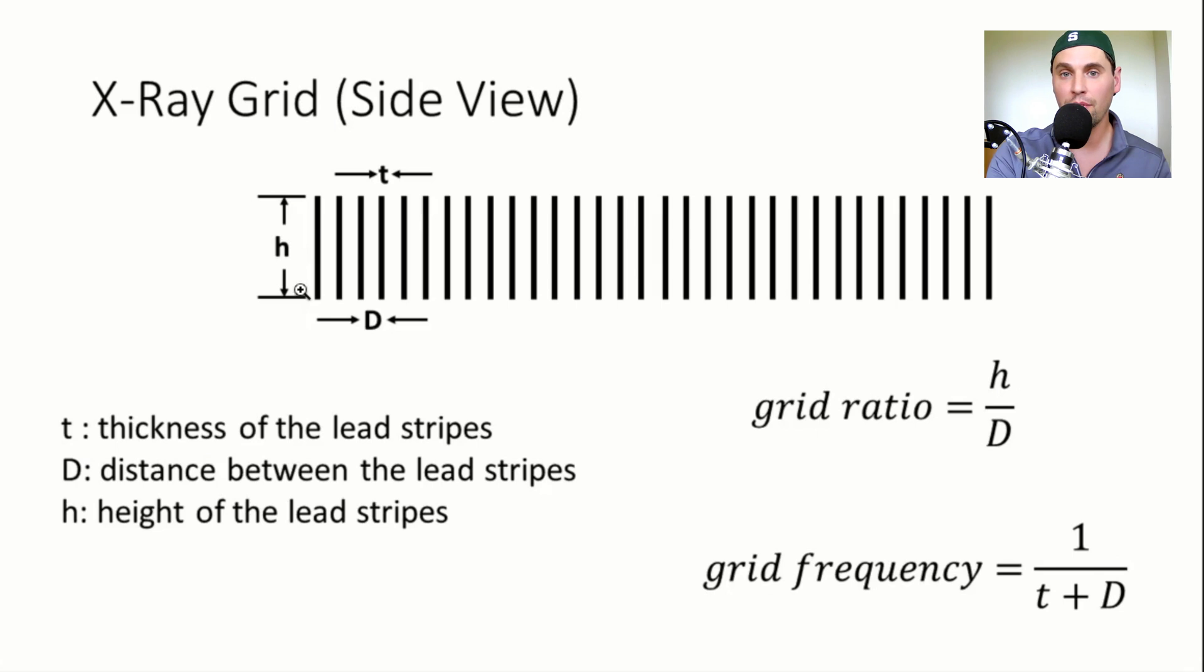You can see some of the geometry of a regular scatter grid where we talk about the height. So we refer to that as h. That's the height of what we call the septa, these little x-ray attenuating objects. And they're little plates here we call septa. They're typically made out of lead or something that's highly x-ray attenuating. And we talk about the thickness of one plate is called t here. And then the distance between the different plates is called D.